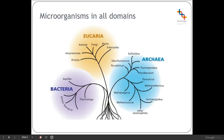Microorganisms are found in all three domains of life: bacteria, archaea, and some in eukaryotes. Eukaryotes are organisms which have a membrane-bound nucleus, whereas prokaryotes don't — both bacteria and archaea are examples of prokaryotes.